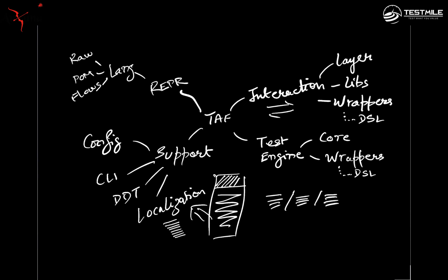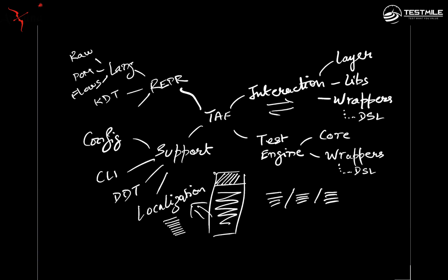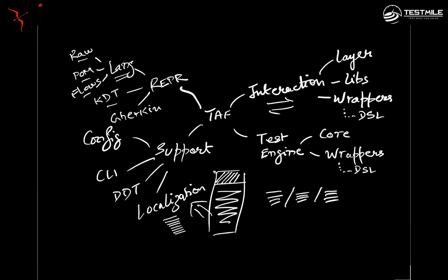Or you could go for non-language represented tests. You could be talking about KDT — keyword driven testing. There's another very popular representation, which is Gherkin, and you can see that used in the agile world a lot these days. One fact which still remains is that whether you are going for language-based tests — raw, POM, flows, keyword driven, or Gherkin — at the back end of all of this, in the form of direct code or fixtures, it is still code written in a particular language.